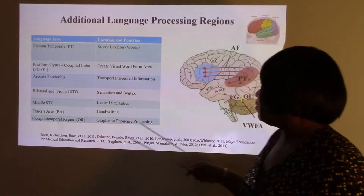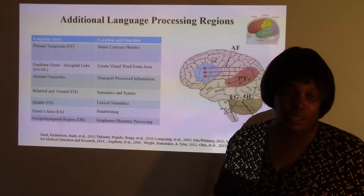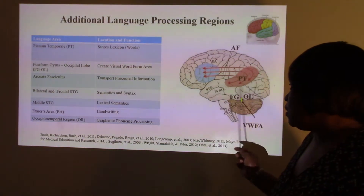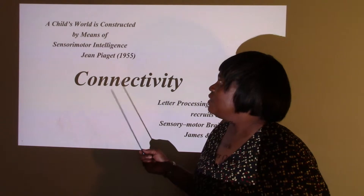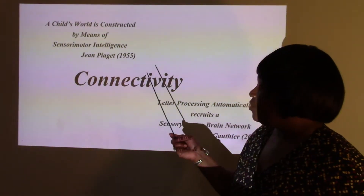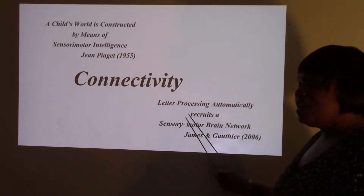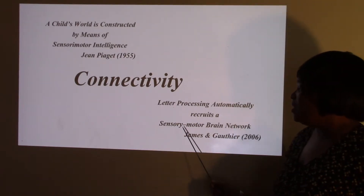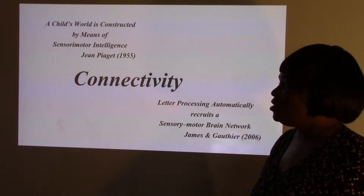I included handwriting, the Exner area, and also the occipital temporal area. The Exner area is connected to language learning. Looking at connectivity, Broca's area is also connected to other areas. We can look at Jean Piaget's work — in 1955 he said that a child's world is constructed through the sensory motor intelligences. James Guther and colleagues in 2006 said that letter processing automatically recruits the sensory motor brain network, which is associated with the sensory motor intelligence Piaget was speaking of.